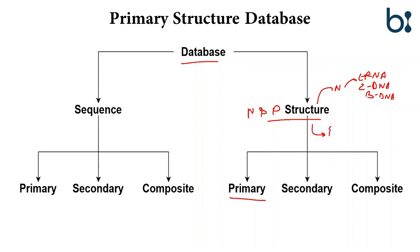If we take the protein structural database, then the primary structure, secondary structure, tertiary structure, quaternary structure, domains, motifs, folding, hydrophilic and hydrophobic regions — all this information comes in the protein structural database. So in this lecture, we will discuss primary nucleotide and protein structural databases.